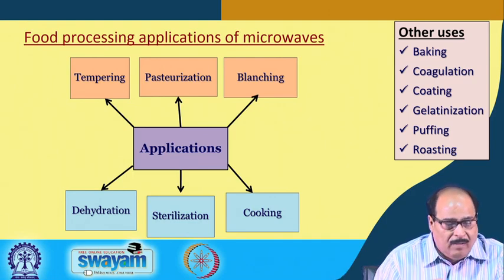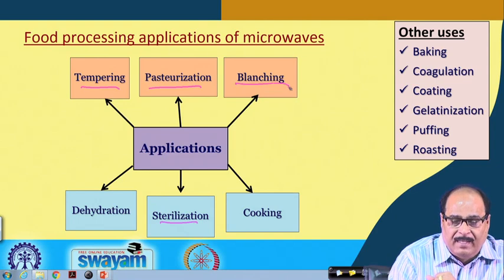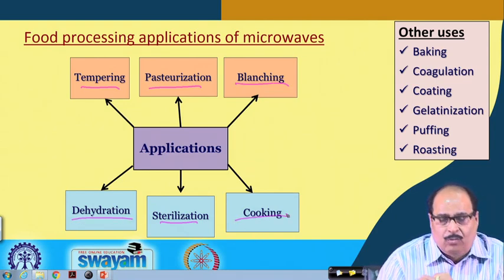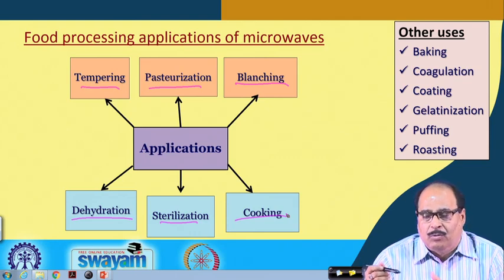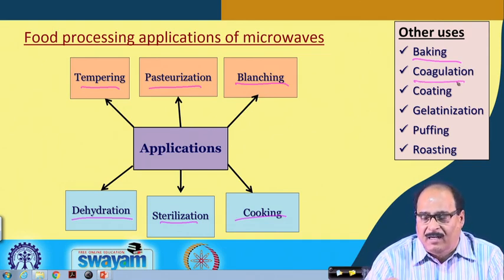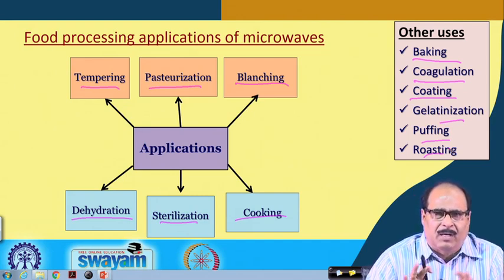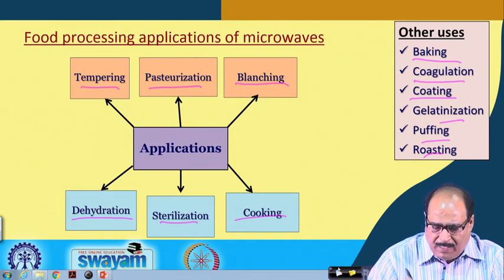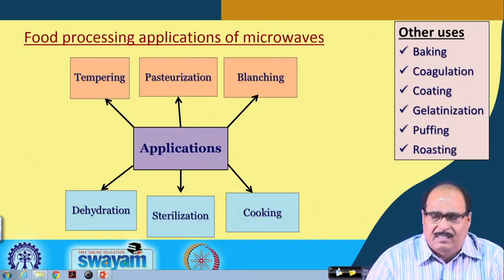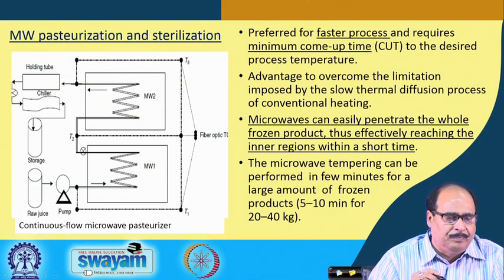Microwaves can be used for tempering, pasteurization, sterilization, blanching, dehydration, cooking, baking, coagulation, improving functionalities, coating, gelatinization, puffing, and roasting. For a wide range of process applications and preparation of different products, or to improve characteristics and increase shelf life, microwaves can be used. Wherever heat is used in a process, microwaves can also be used, but with different objectives.